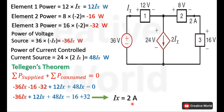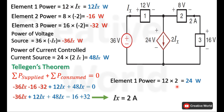Now we have the value of Ix, and the voltage across element 1 is also known, so we can calculate the power of element 1. The power of element 1 is the product of voltage and current: voltage across it is 12 V and current Ix is 2 A. So the power is 24 W, and this power is being consumed by element 1 because of the positive sign.